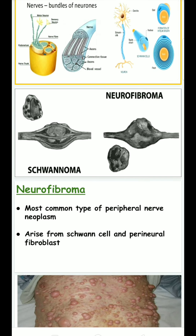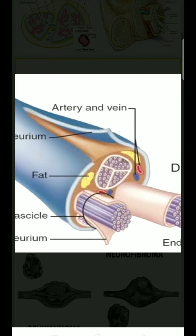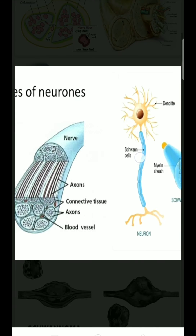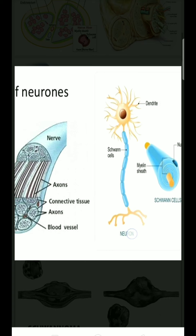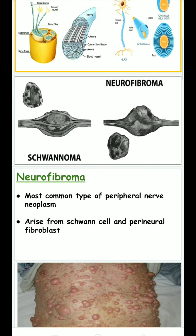Neurofibroma is the most common type of peripheral nerve neoplasm. It arises from Schwann cells and perineural fibroblasts — meaning this perineurium has fibroblasts. It also arises from Schwann cells, so schwannoma and neurofibroma are clinically similar; in order to distinguish them, only histological examination is used.